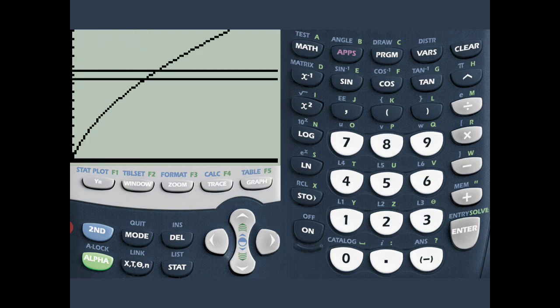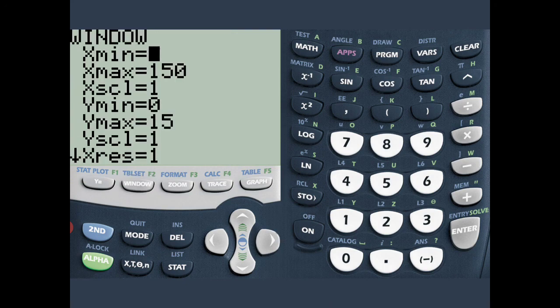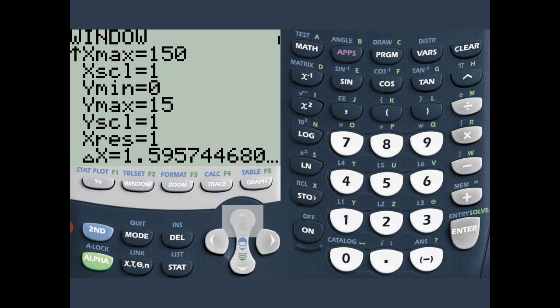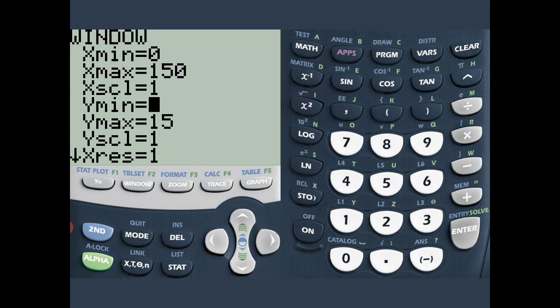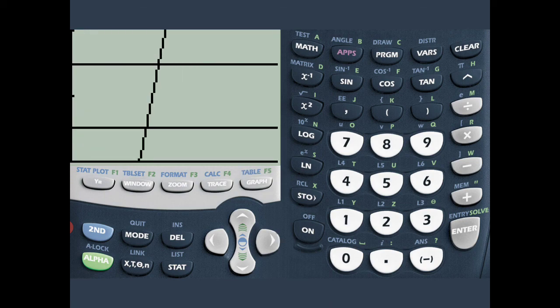So that curve there is the Beaufort scale curve. And then the two horizontal lines that you see there are, is the Beaufort number ranging from 9.5 to 10.49. I'm going to zoom in now by closing in on the Beaufort numbers. So my Y min, I want to make it 9. And my Y max, I'm going to make that 11. And then I'm going to press graph again.